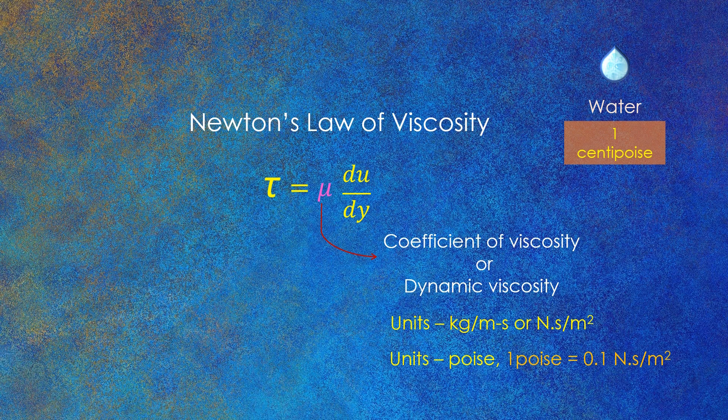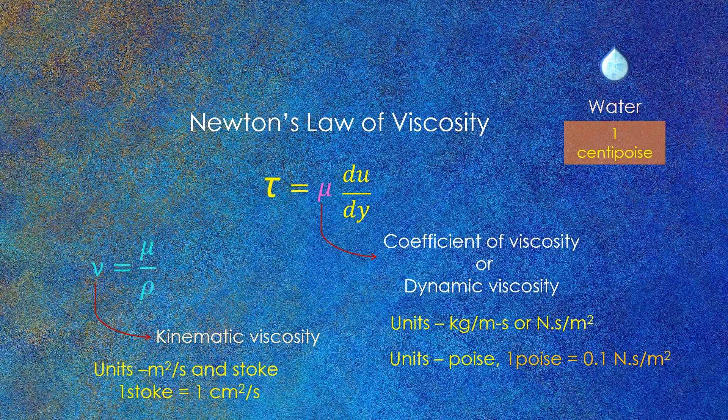Another quantity which appears frequently in fluid mechanics and heat transfer is the ratio of dynamic viscosity to density. This ratio is known as kinematic viscosity. Kinematic viscosity is a measure of fluid's internal resistance to flow under gravitational forces. It has units of meter square per second and stoke. One stoke is equal to one centimeter square per second.